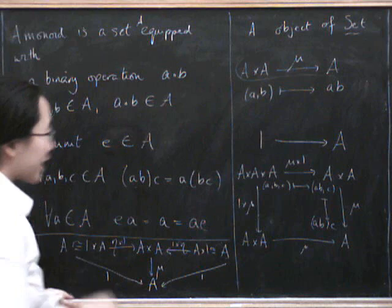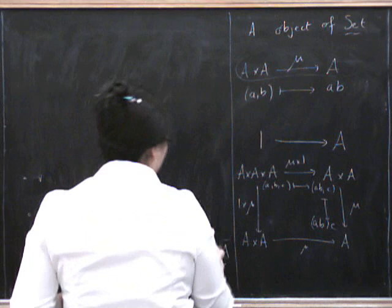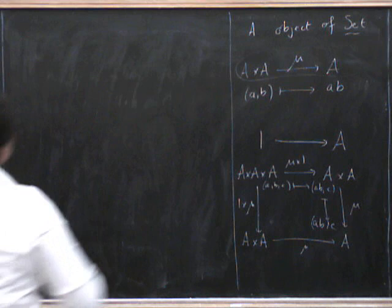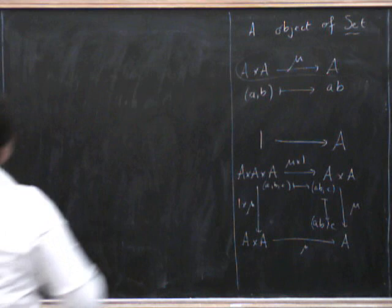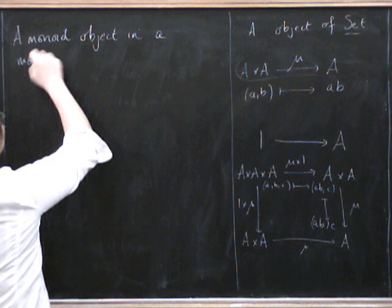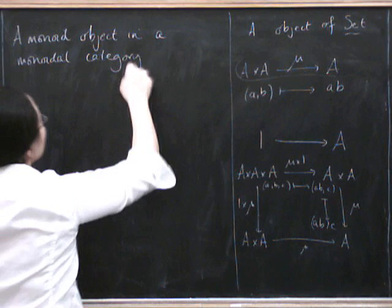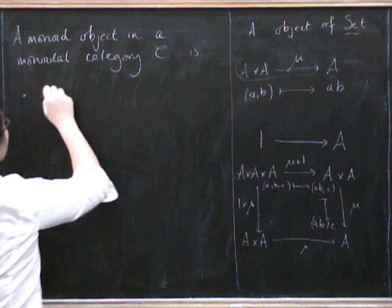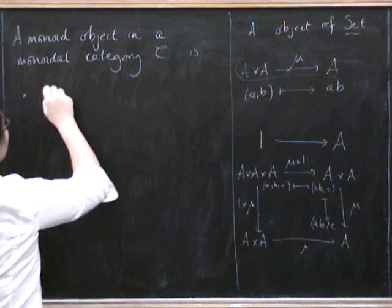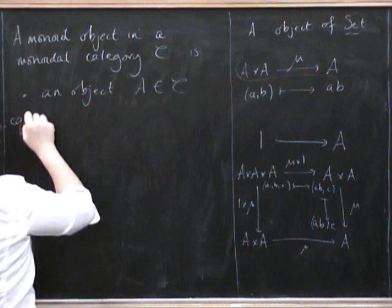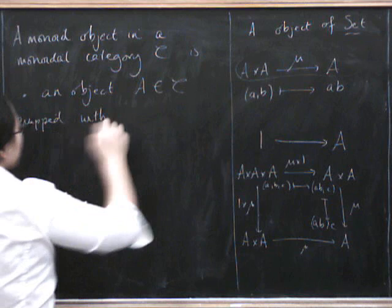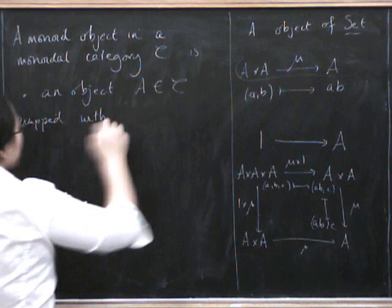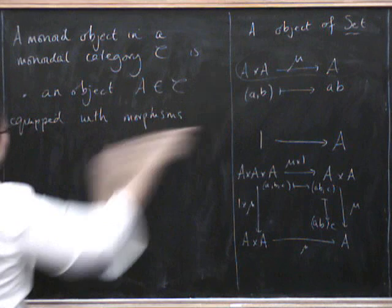So now we can just take this definition and put it in some other monoidal category and give ourselves the notion of a monoid object. So a monoid object in a monoidal category C is an object A equipped with